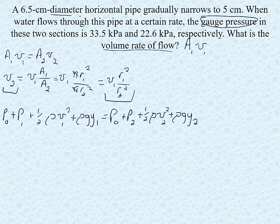We've said that they're at the same level. So rho gy1 and rho gy2 are going to cancel each other. And we have a Po on both sides. So those are going to cancel each other out. So what we end up with is that P1 plus one half rho v1 squared equals P2 plus one half rho v2 squared.